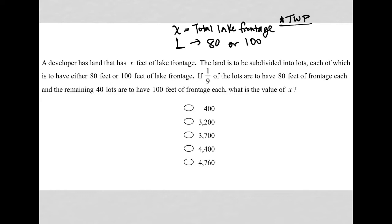The next sentence says if one ninth of the lots are to have 80 feet of lake frontage each, and the remaining 40 lots are to have 100 feet of frontage each, what is the value of X? In essence, this sentence is giving us a mathematical equation. One ninth of the lots, of always means multiply, the lots. Do we know how many lots we have? No, we don't. So just one ninth of L plus, so that represents the 80 feet lots.